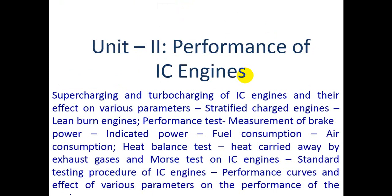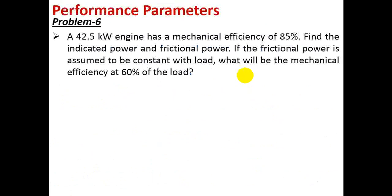In last lecture we solved some problems on performance parameters. Today we will do some more problems. Let us take this problem: a 42.5 kilowatt engine has a mechanical efficiency of 85 percent. Find the indicated power and frictional power.